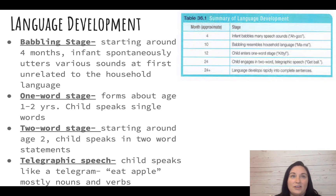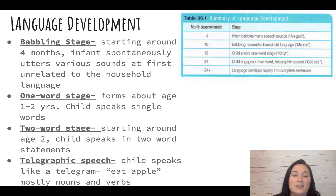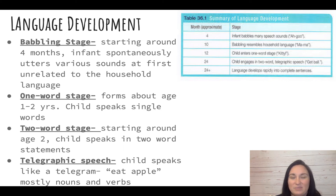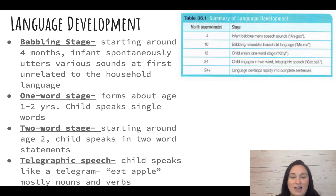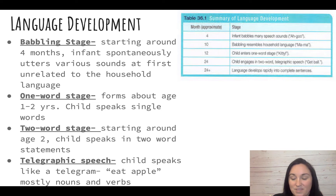At the two-word stage, they start to speak things like 'mama buy,' 'go car' — just putting two things together to get some sort of meaning — and this occurs by about age two. Telegraphic speech is when they string words together using just nouns and verbs; it doesn't have to be exactly two words, but they're not forming a full sentence. Like a telegram, it's just nouns and verbs — getting straight to the point.